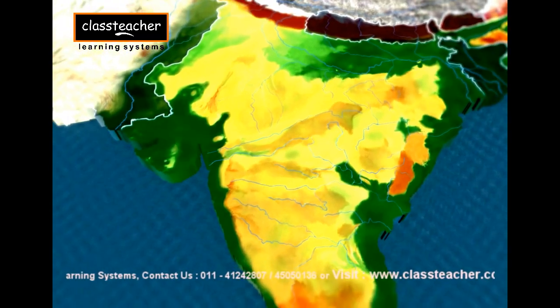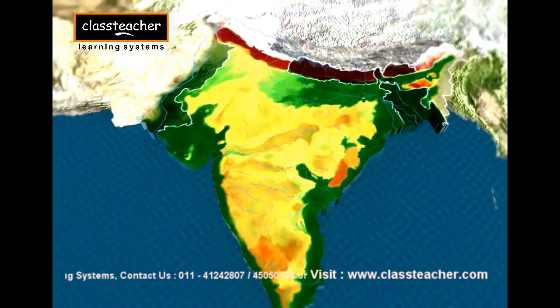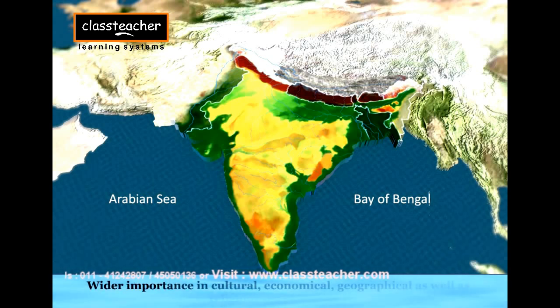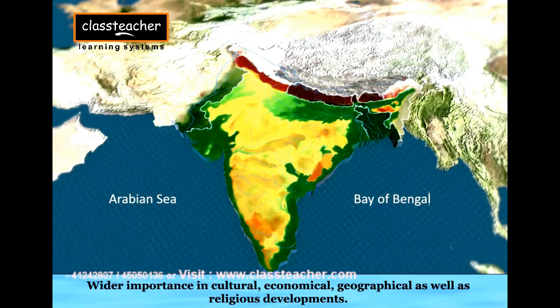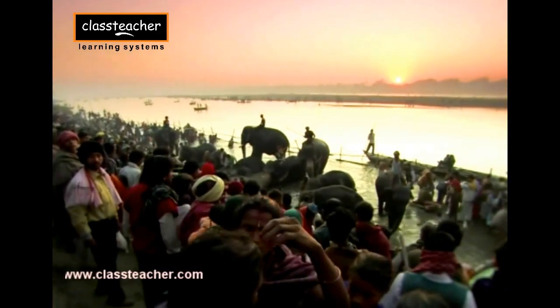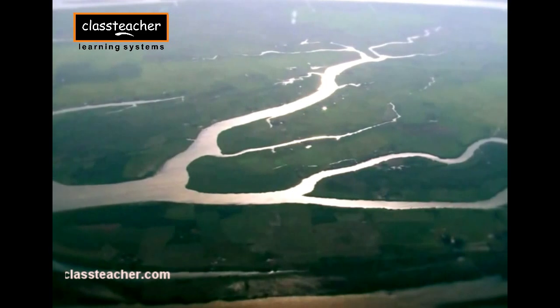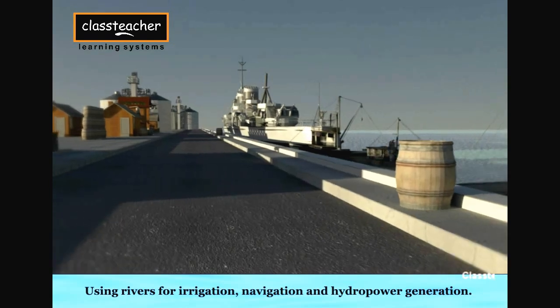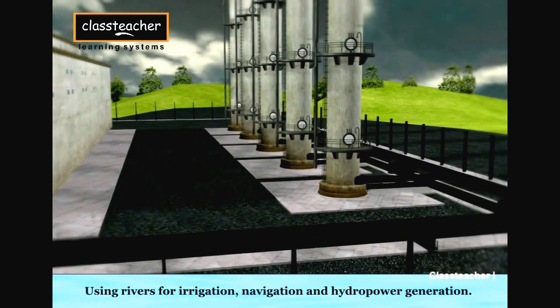Rivers form one of the most distinctive features of India. Amongst its many geographical marvels, they also carry a wider significance in cultural, economical, geographical, as well as religious developments. The rivers in India are considered as gods and goddesses. Rivers have been of fundamental importance throughout human history. Water from the river is a basic natural resource. Using rivers for irrigation, navigation, and hydropower generation is of special significance, leading to a flourishing Indian economy.